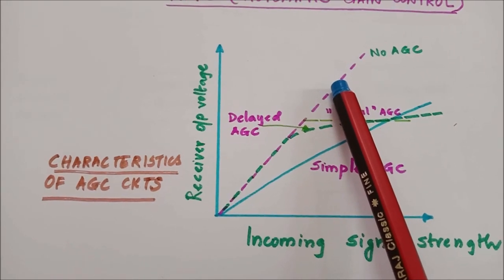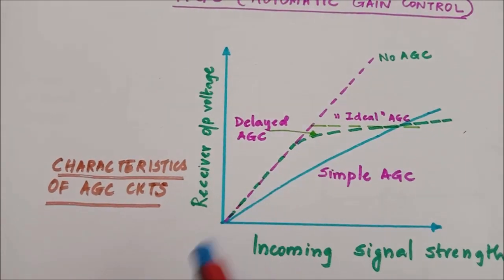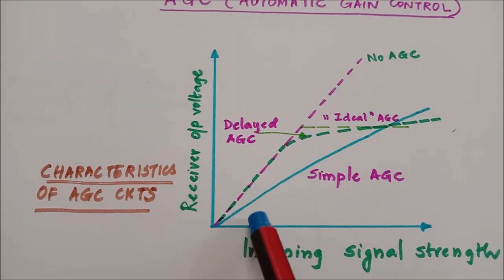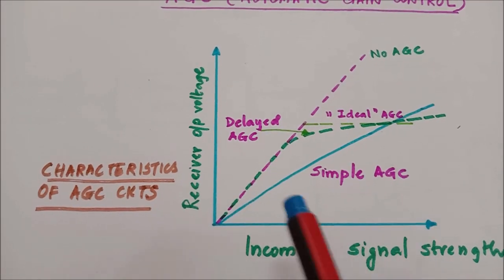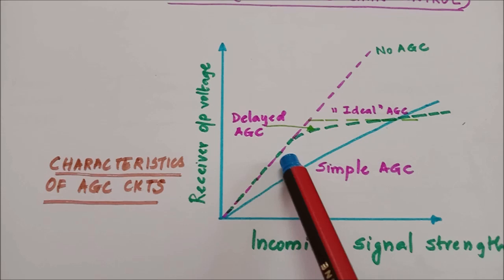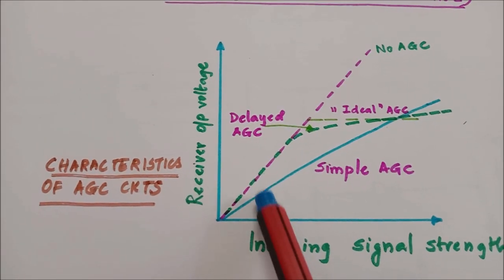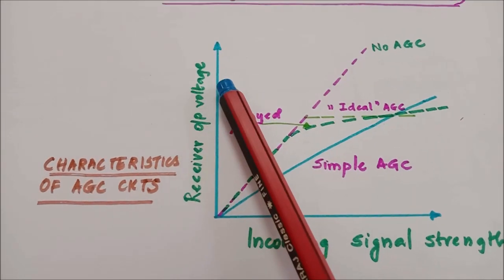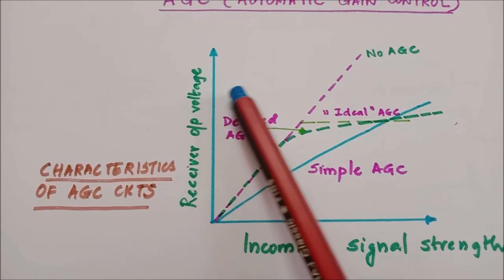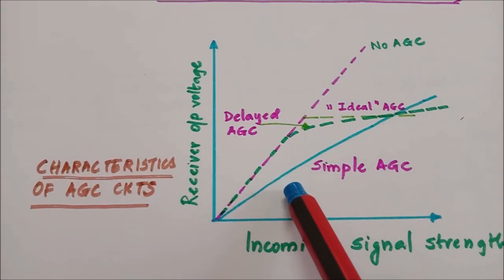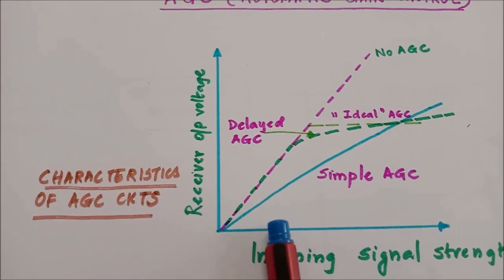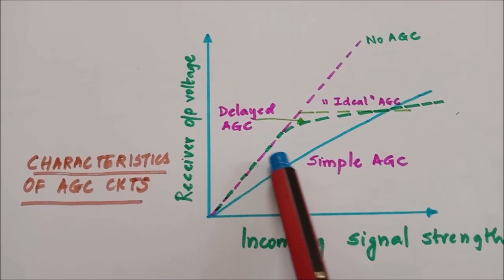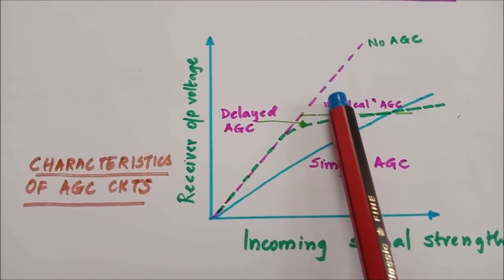For a receiver with no AGC, there is no control over the output regardless of the signal strength. When the signal strength is low, the receiver gives a low output; when the signal strength increases, the receiver gives a higher output. So for some channels where the signal strength is high you hear it very loudly, while for other channels where the signal strength is very weak you hear it very feebly. That is the case for no AGC.